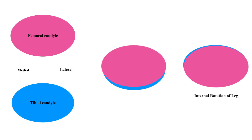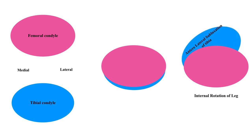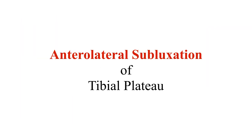However, in a knee joint with a ruptured anterior cruciate ligament, when a medially directed force is given to the leg in the form of internal rotation of the leg, there is an anterior and lateral subluxation of the tibial plateau from the distal femoral condyle as depicted in the video.